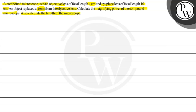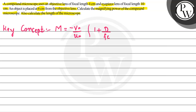Let's see the solution. The key concept we have used is: magnification power of the compound microscope equals minus of v-naught by u-naught, in bracket 1 plus capital D by f of E. This is the key concept, and we also use the lens formula: 1 by v-naught minus 1 by u-naught equals 1 by f-naught.